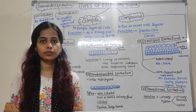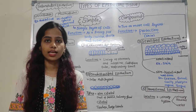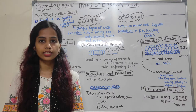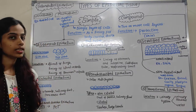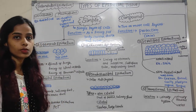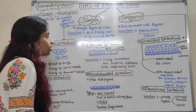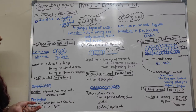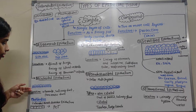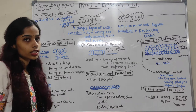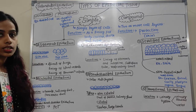Hello everyone, welcome. Today we will learn about types of epithelial tissue. In the last class we discussed epithelial tissue and their examples. Epithelial tissue is basically divided into two types: simple and compound. Simple is further divided into squamous epithelium, cuboidal epithelium, columnar epithelium, and pseudostratified epithelium.